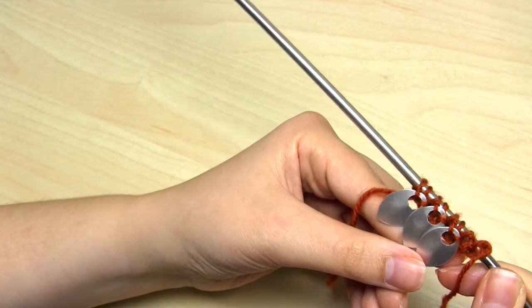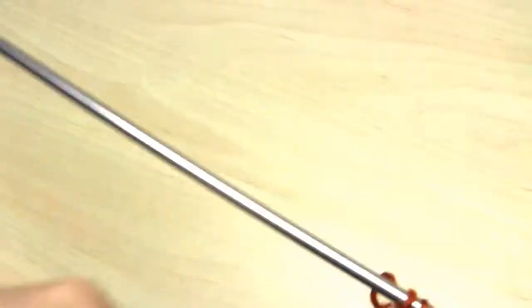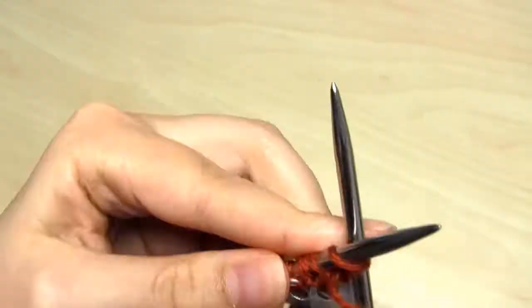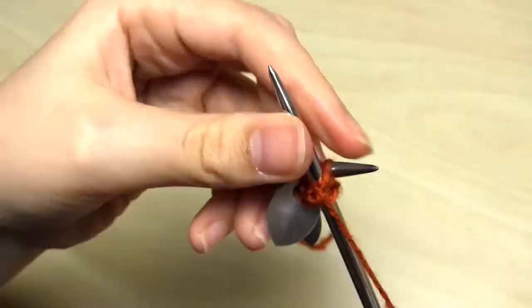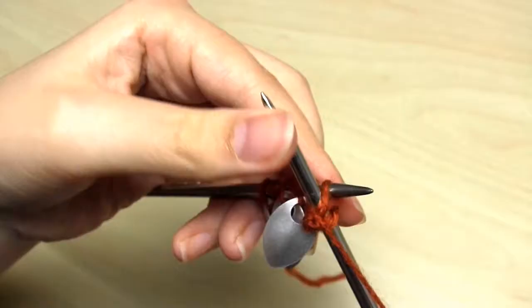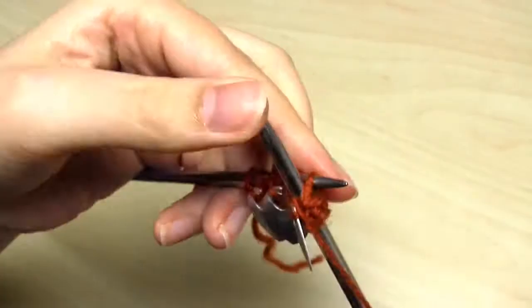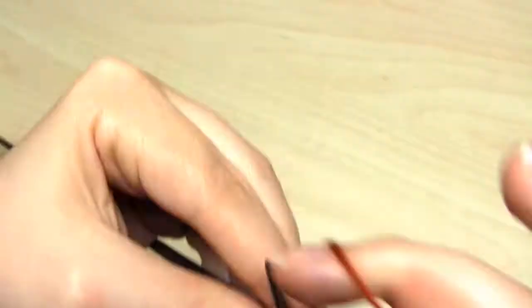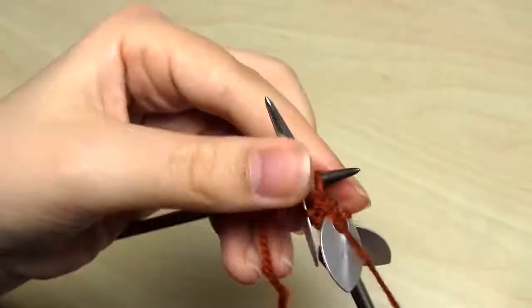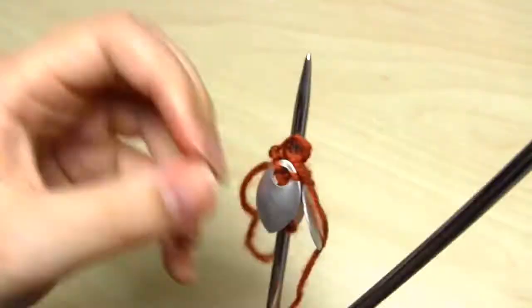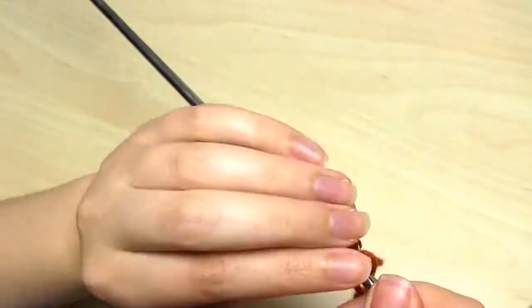It is possible to add scales on the purl row, and I'll do a very quick demo later in the video on how to do that. However, I like to space the rows of scales out a little bit. Otherwise, they can look a bit too bunched up, and also the weight of the knitting would double if you added scales to both the knit rows and the purl rows.